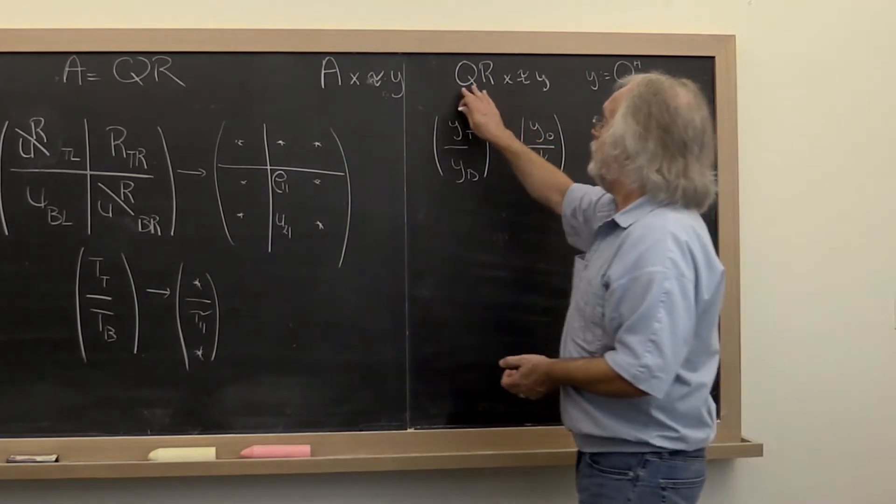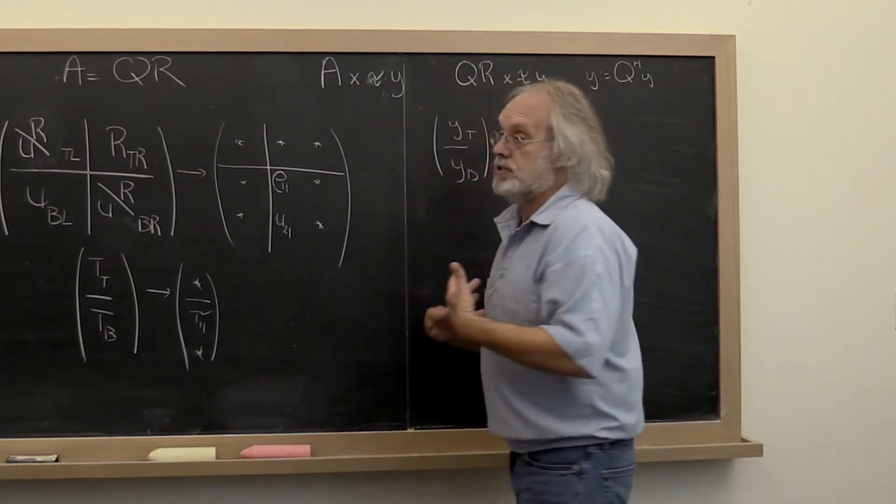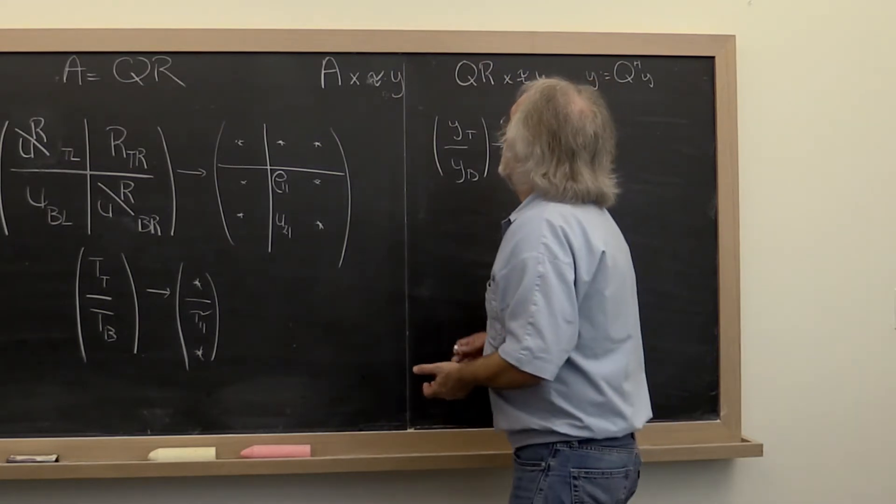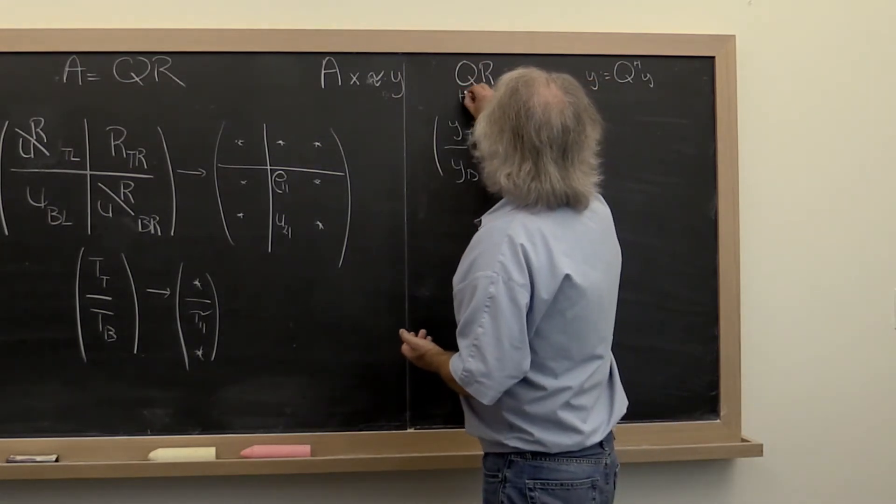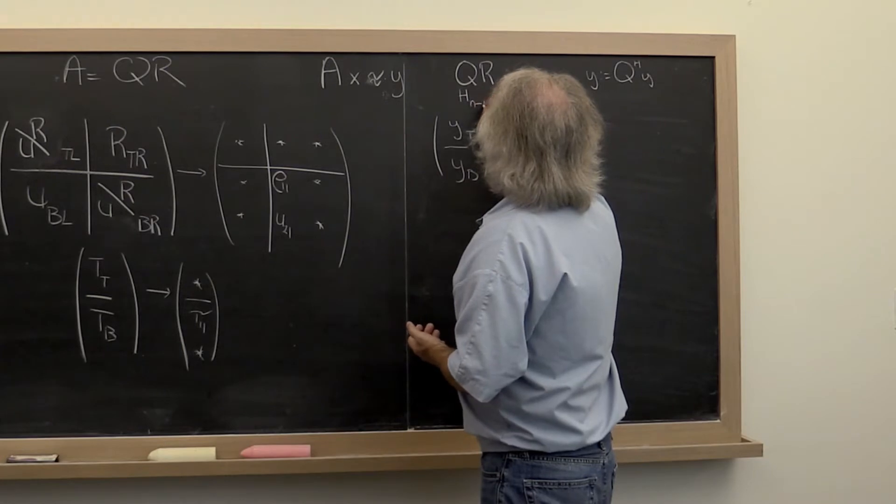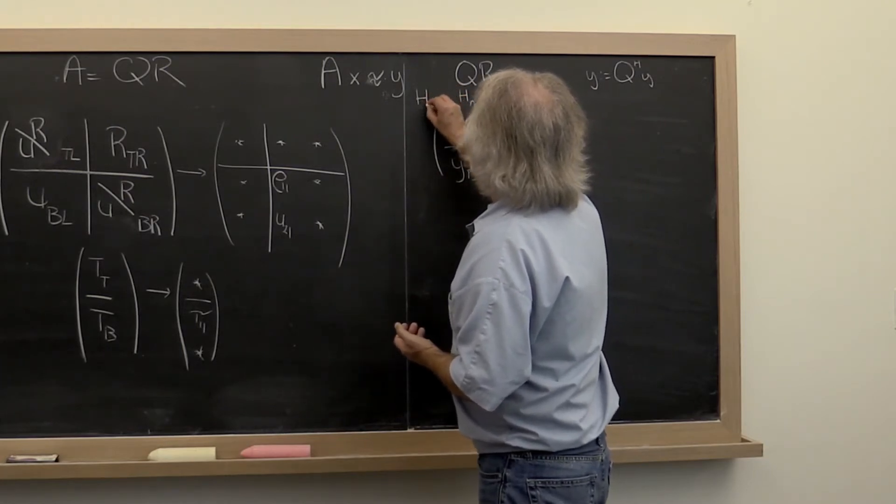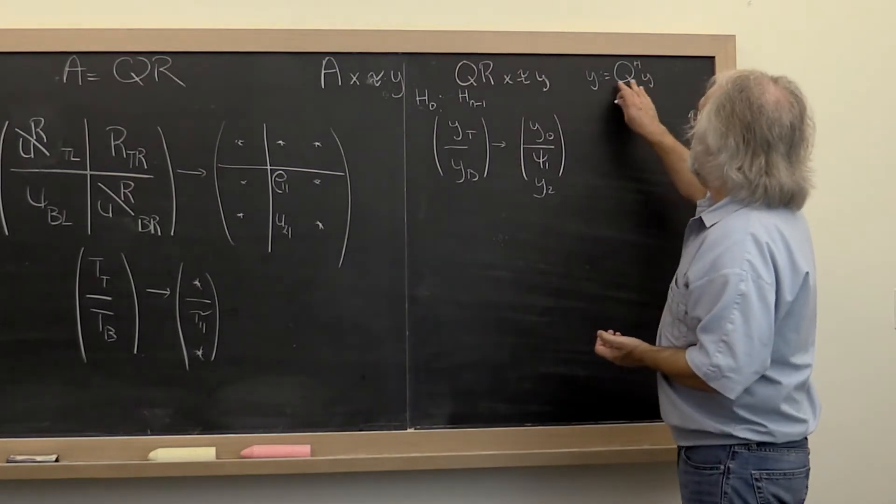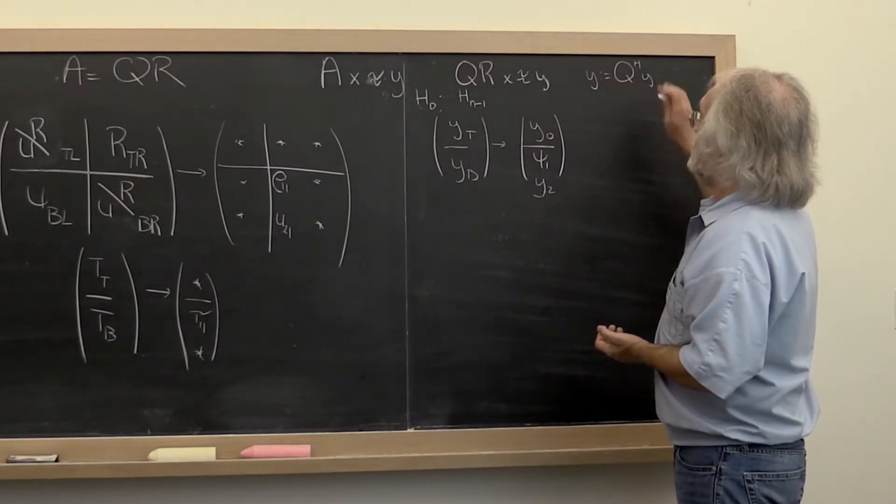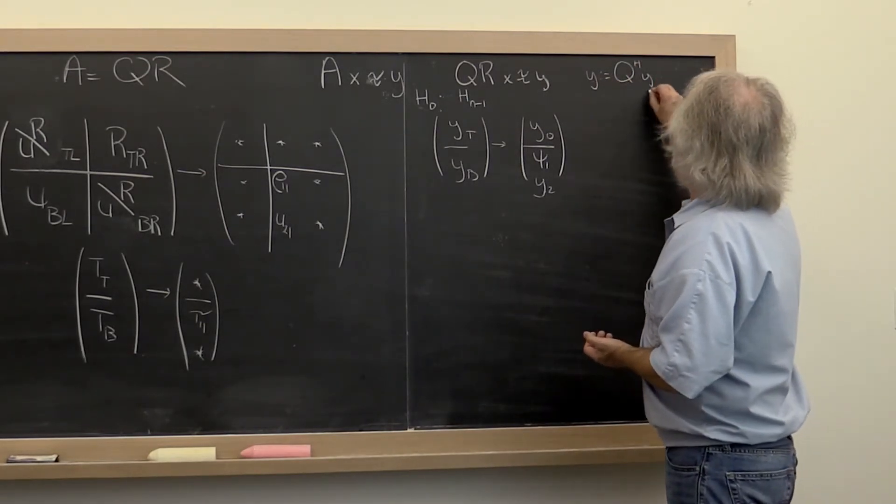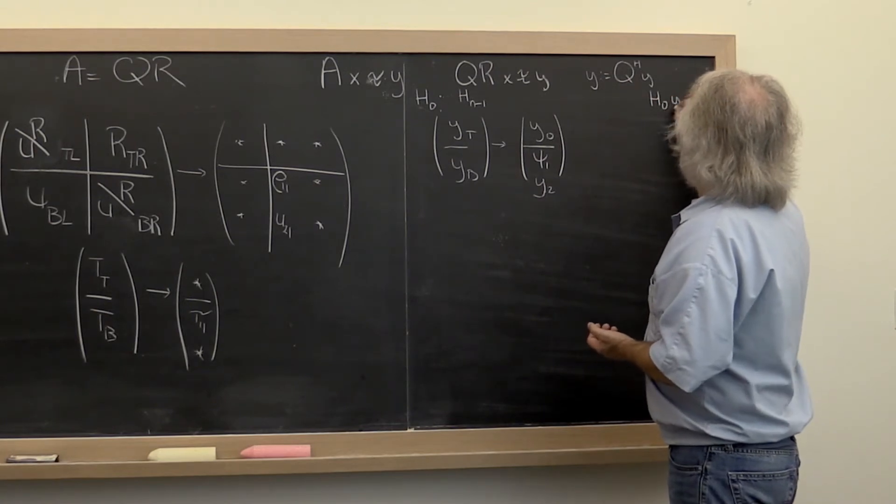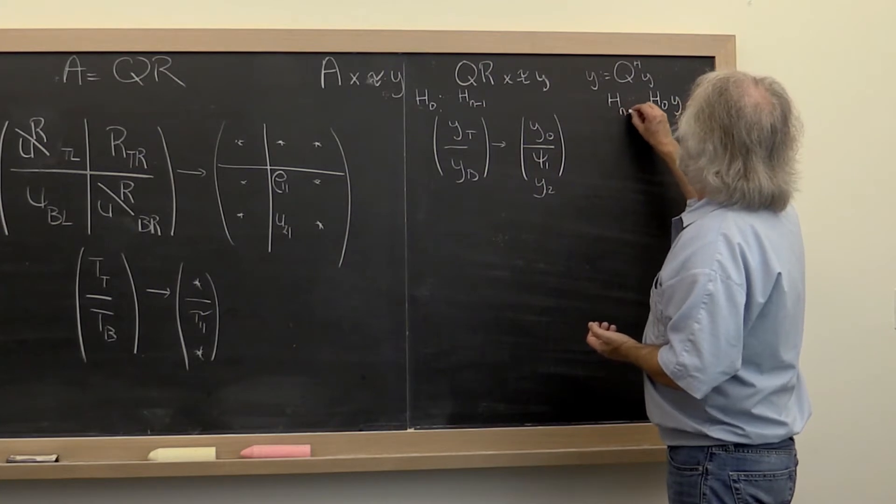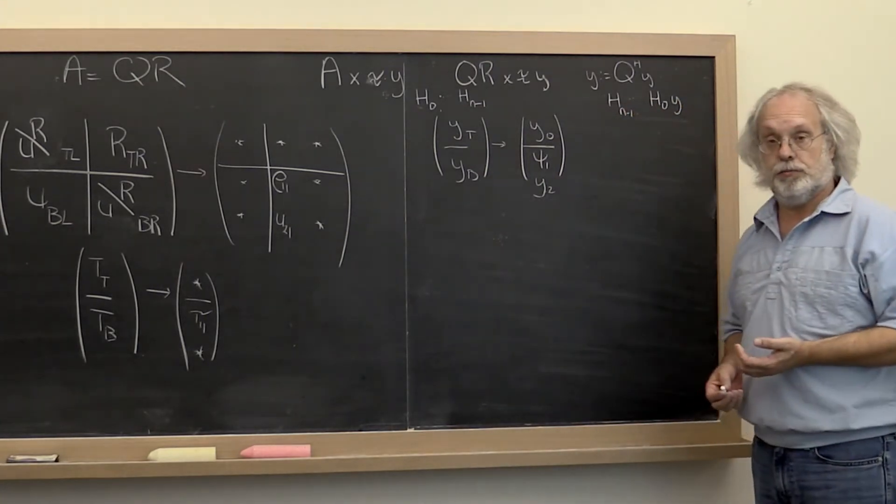Now if Q was stored as this sequence of Householder transformations, then Q really exists as all of these h's. And then if you want to update y with Q Hermitian transpose times y, what you really need to do is multiply y in the reverse order by all of these Householder transformations.